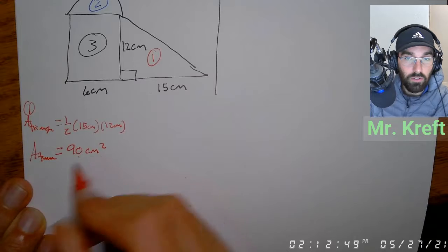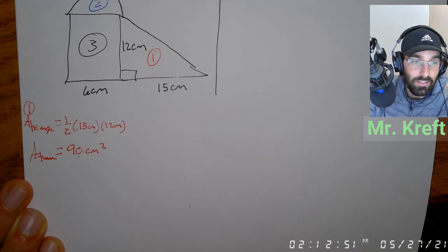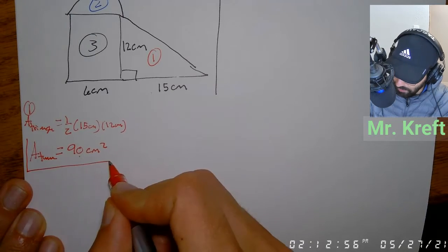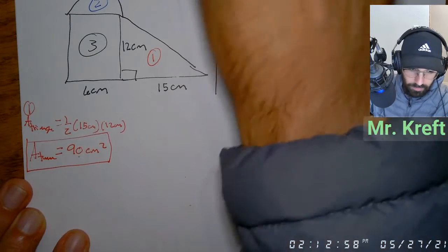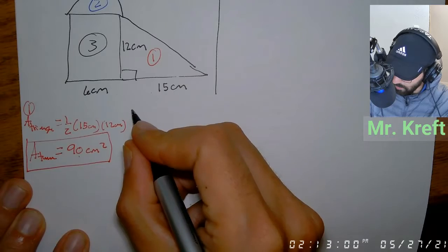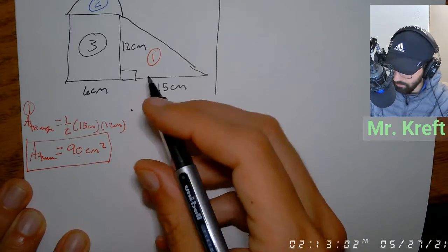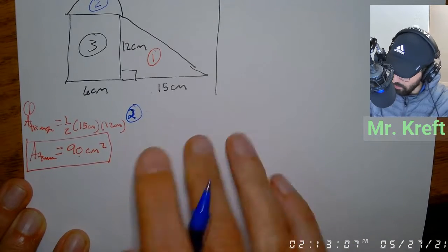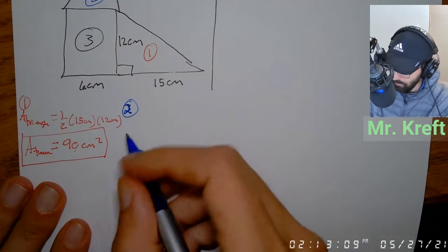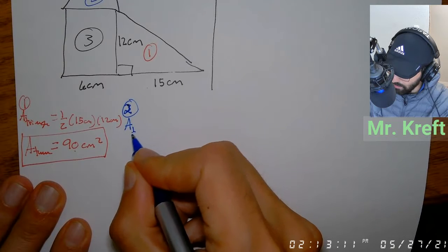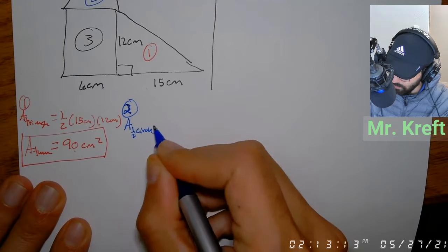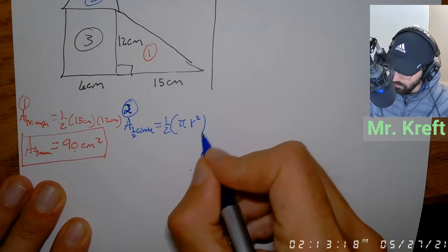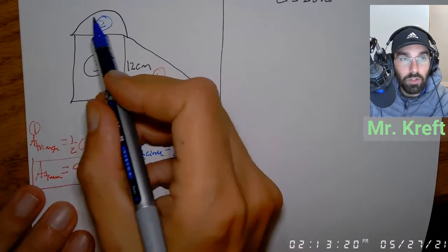Area is squared because it's the second dimension, and we'll talk more about dimensions in a little bit. That's the area of our triangle. Next I'm going to find the area of our half circle, which is going to equal one-half times the area of a circle.